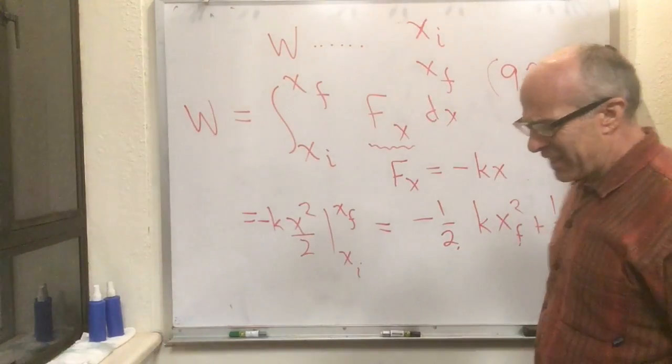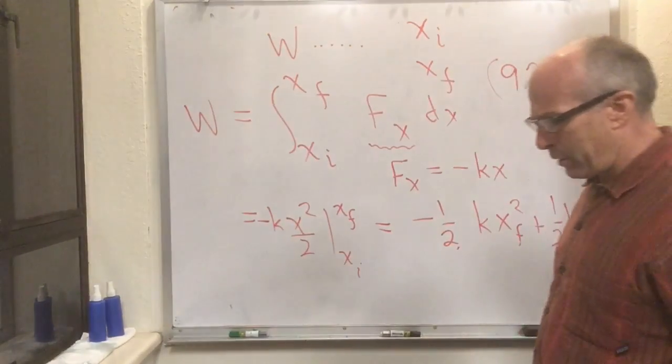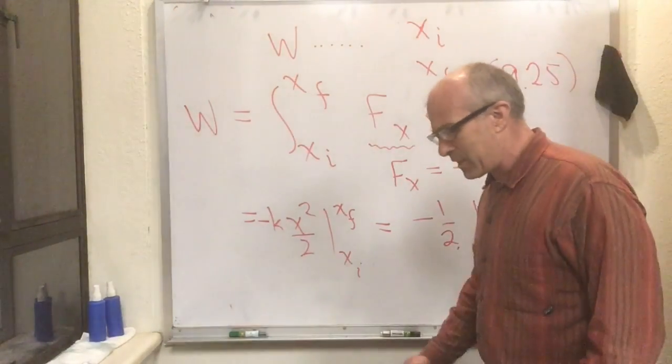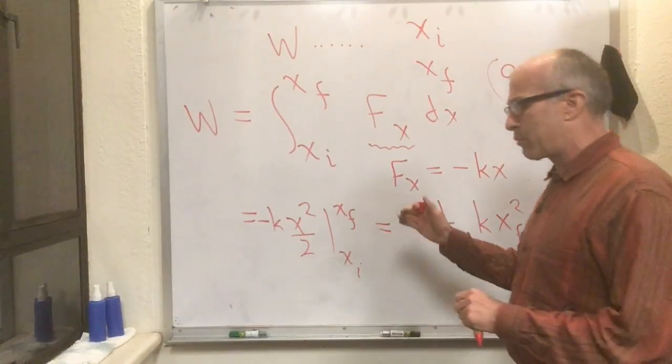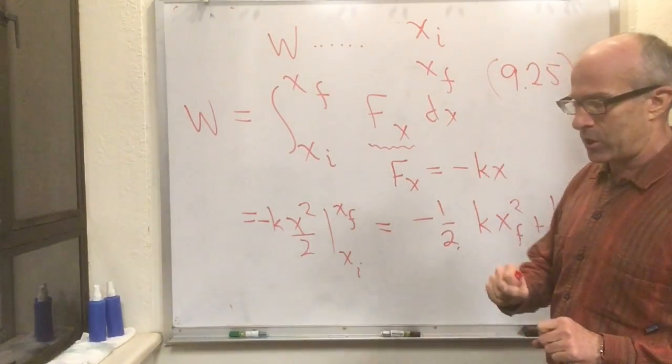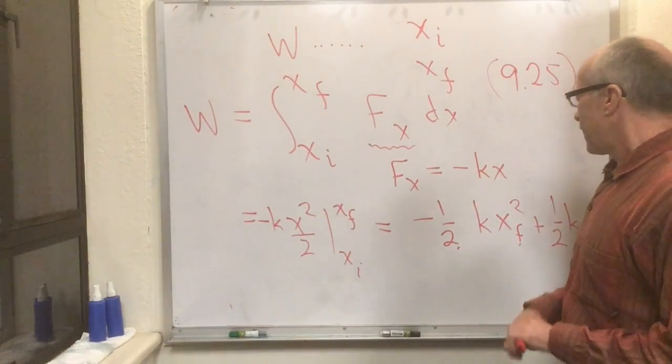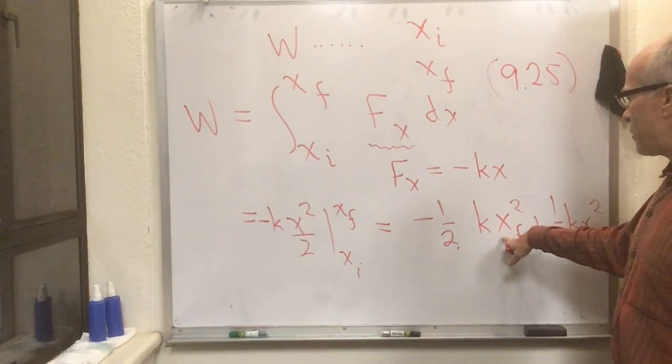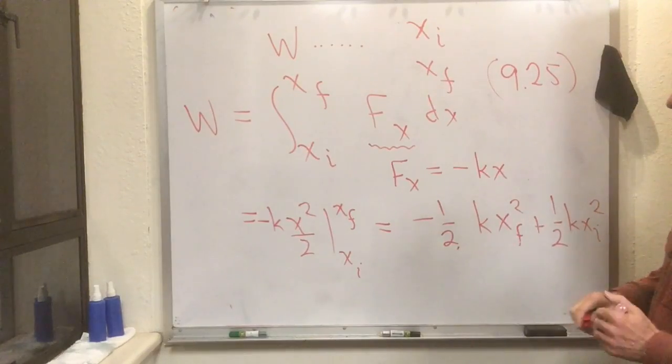By delta s he means the amount that the spring has moved from its natural position. Since I chose the natural position to be zero, I don't have deltas all over the place.